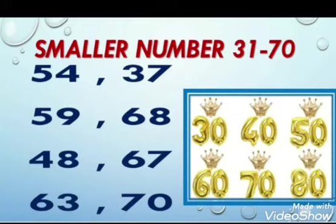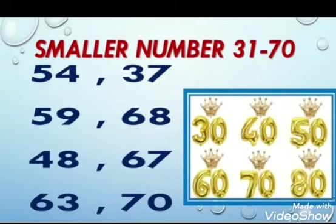Look at this example — which is the smaller number: 54 or 37? In the first number 54, 5 is tens and 4 is ones. In the second number 37, 3 is tens and 7 is ones. My dear students, tens are different in this example.